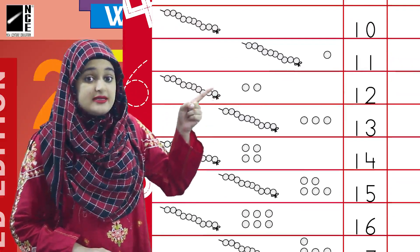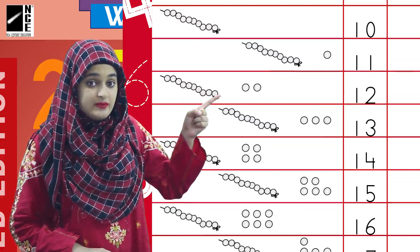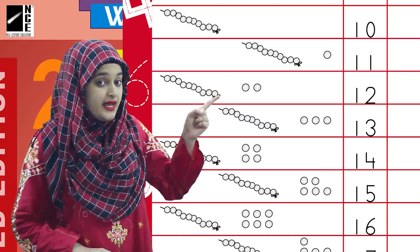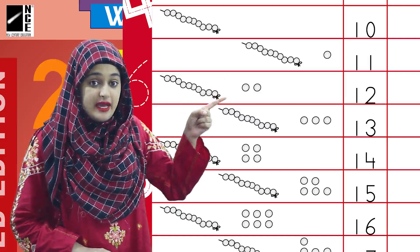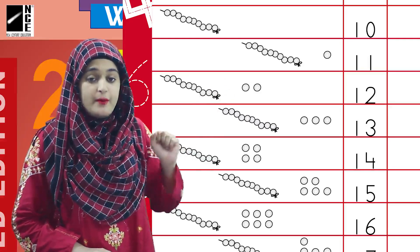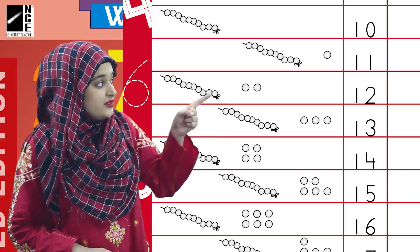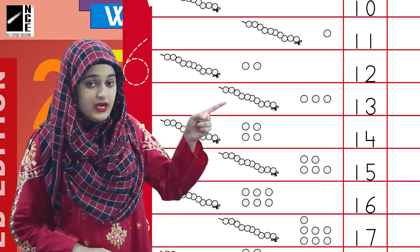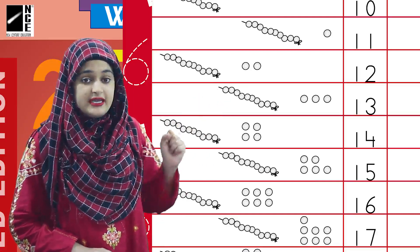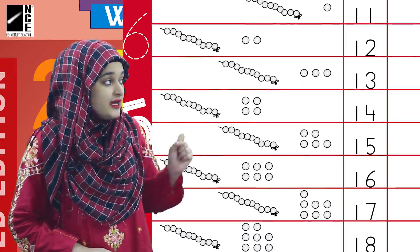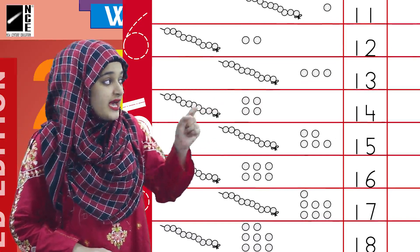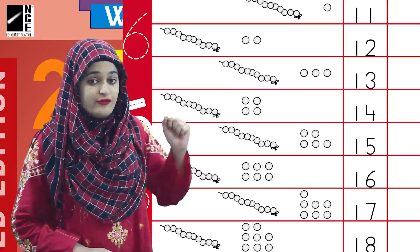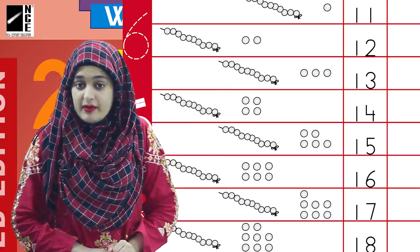Now, this is a string of 10 beads and there are 2 beads. So when 10 meets 2, they make 12. Likewise, there is another string of 10 beads and there are 3 beads, so 10 and 3 make 13. Then comes 4 beads with a string of 10 beads — 10 and 4 make 14.